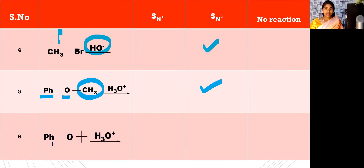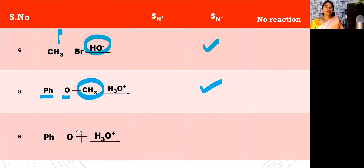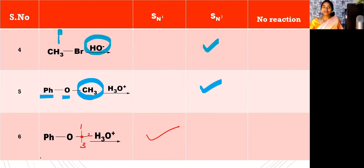And coming here, PhO — see the plus sign here. This carbon is the center carbon surrounded by one, two, three other carbons — so it is tertiary. Whenever tertiary is present, then what is the type of substitution? Unimolecular nucleophilic substitution — that is SN1 reaction takes place.